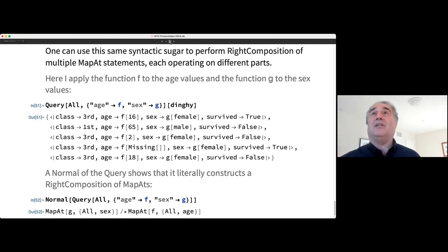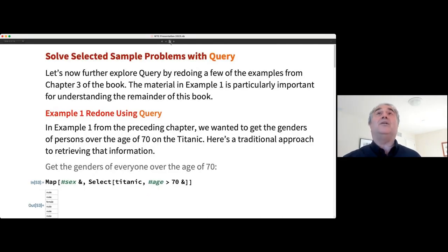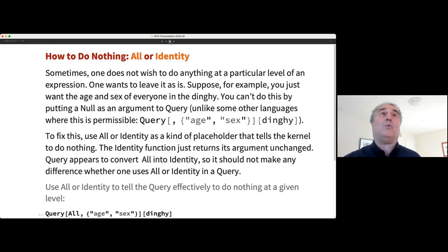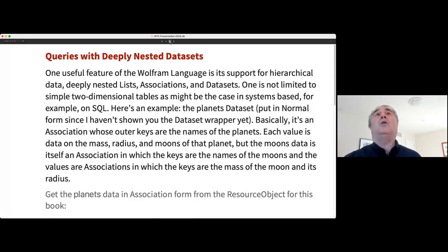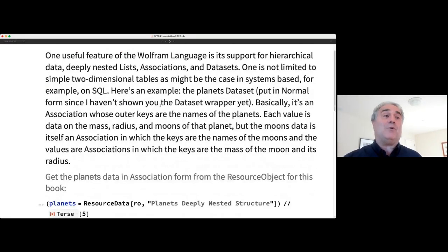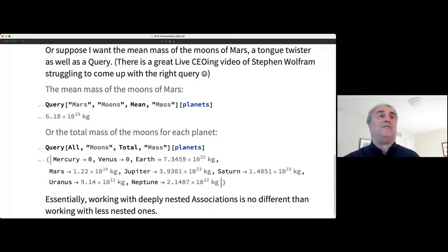All right. So there is lots more that one could talk about. You can see how to solve sample problems with query, what to do when you don't want to do anything at a particular row or column, how to work with much more hierarchical data sets. And in fact, if you want to have a little bit of fun, you can learn how to find the mean mass of the moons of Mars. And there's a wonderful live CEO video where Stephen Wolfram struggles to try and figure out how to do this. And so I wrote this little piece of code for him. This is how you figure out the mean mass of the moons of Mars.